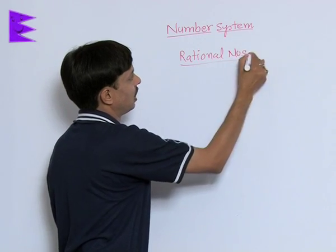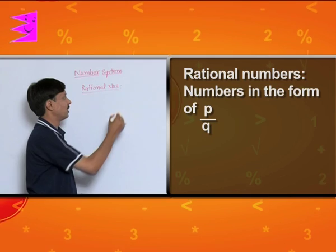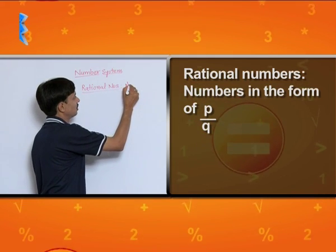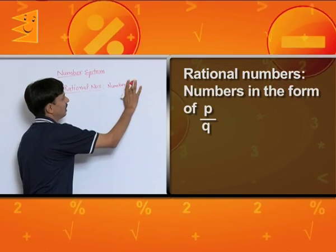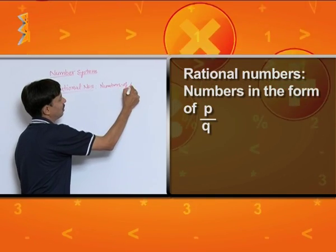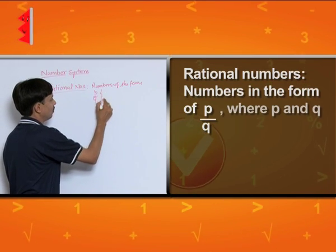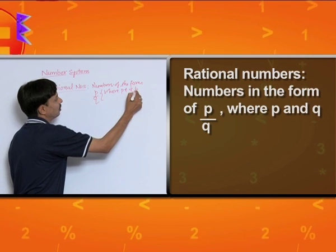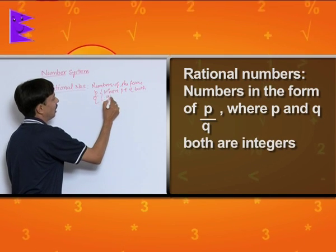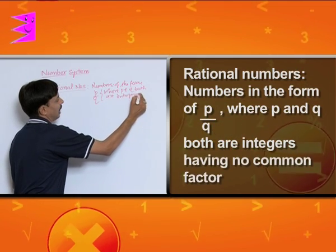What are rational numbers? Numbers in the form of P by Q, where P and Q both are integers having no common factor, and with one mandatory property: Q is not equal to 0.